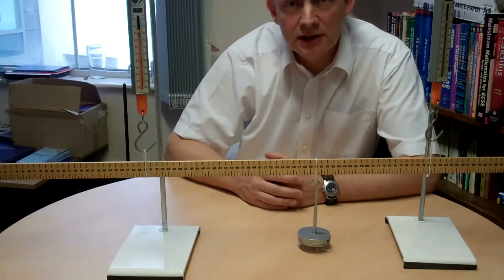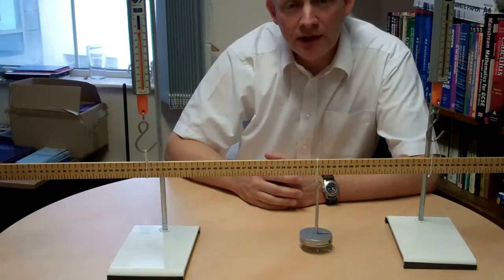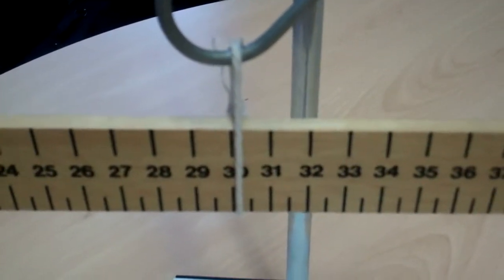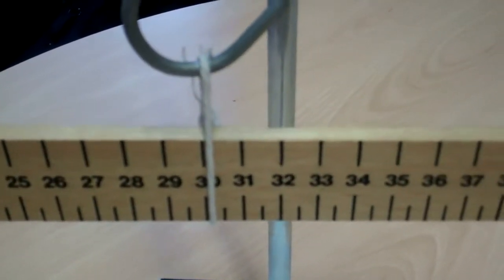Now we're going to take a closer look at the distances so that you can see what figures to use in your calculations. The left-hand support is at the 30 centimetre mark on the ruler.